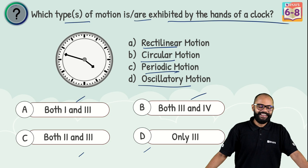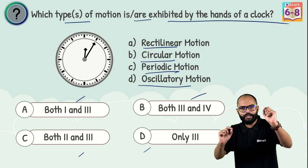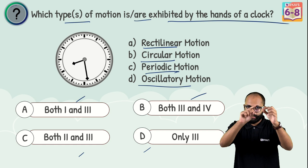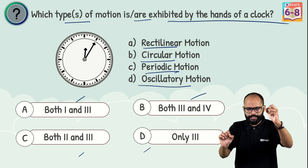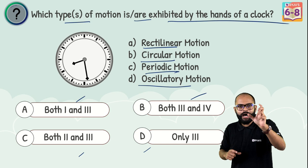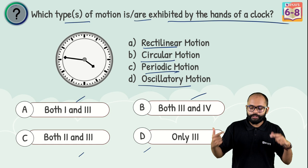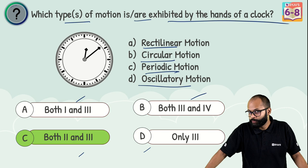The hands of a clock show both circular and periodic motion. Every point on a clock hand moves in a circle — that's circular motion. Also, the hand returns to its original position after a fixed time — the minute hand every 60 minutes, the second hand every 60 seconds, the hour hand every 12 hours. So it is both circular and periodic.